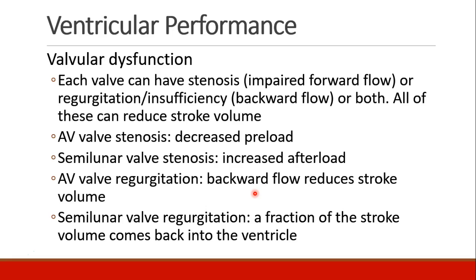Next we talk about the valves. Each valve can have stenosis, which impairs forward flow, or regurgitation, which causes inappropriate backward flow — or both. All of these reduce stroke volume by making it harder for the heart to eject blood efficiently. Patients with stenosis of their AV valves can't fill their ventricles well, resulting in decreased preload. Patients with stenosis of their semilunar valves, like the aortic valve, have increased afterload because they're pumping against a tiny opening. If patients have regurgitation of their AV valves, part of the blood goes in the wrong direction, reducing cardiac output. And if patients have regurgitation of their semilunar valve like the aortic valve, they pump out blood well but some comes back in during diastole, again decreasing ventricular performance.